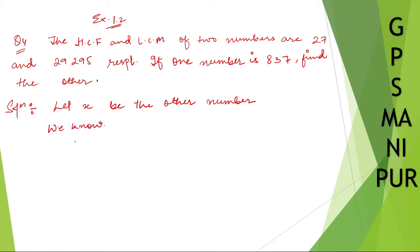We know something. What do we know? HCF times LCM is equal to the product of the two numbers. So one number is 837, another number we have taken as x. Now what is the HCF of this equation? HCF is given as 27, right? Write down 27 into, what is LCM? 29295 is equal to 837 into x.